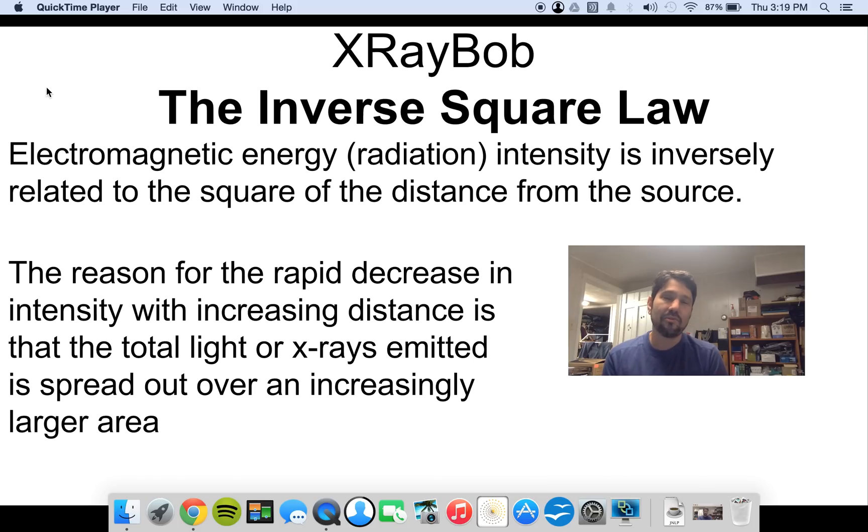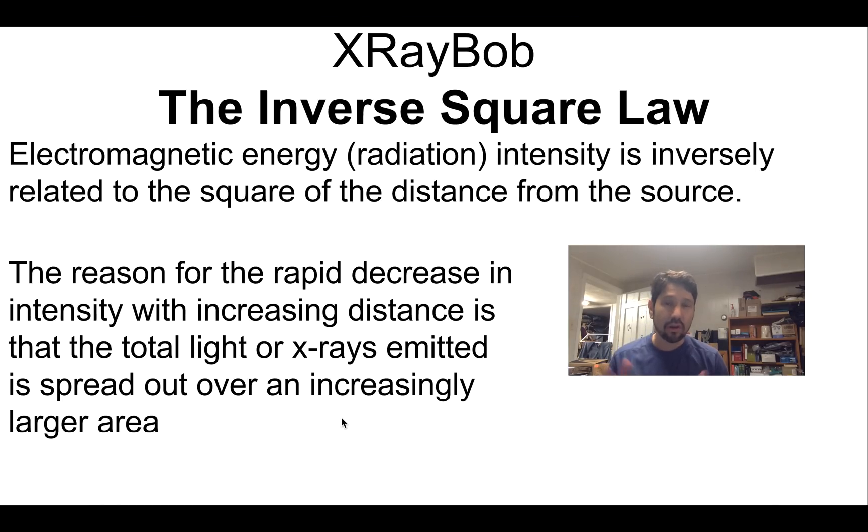And the reason for this rapid decrease in intensity when we increase the distance is because the total light coming out of the tube is spread out in both X and Y directions. So it's spread out over a larger area, and that area increases in both dimensions as we get further away.